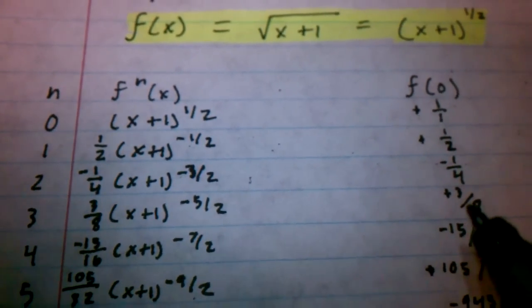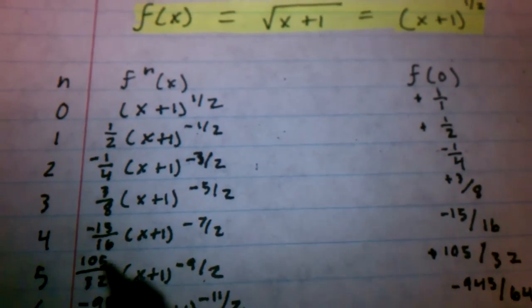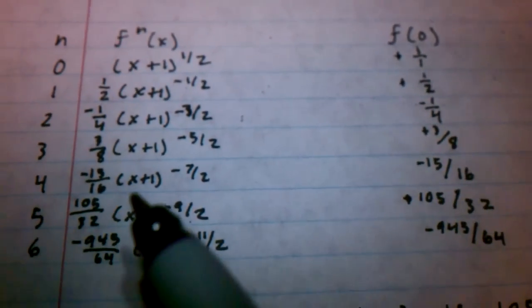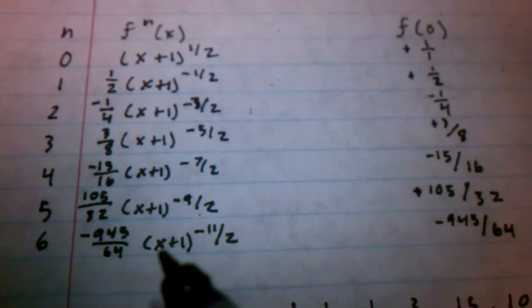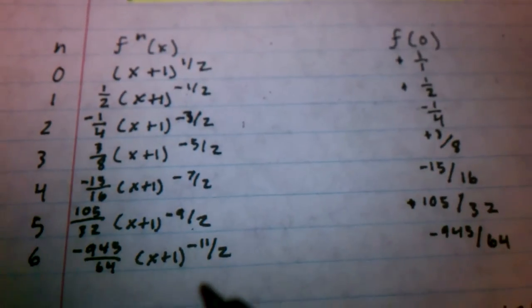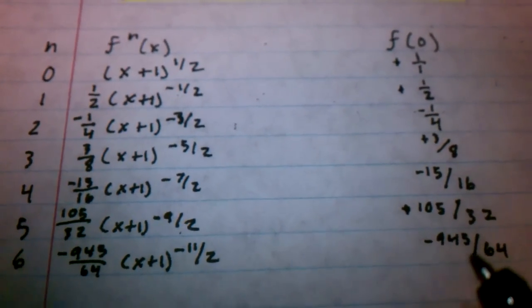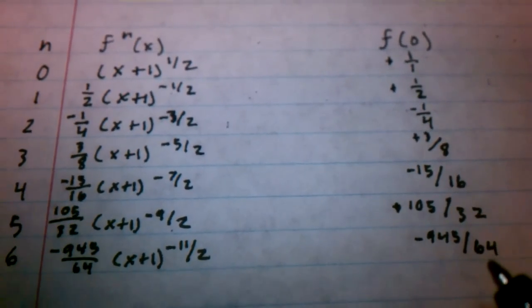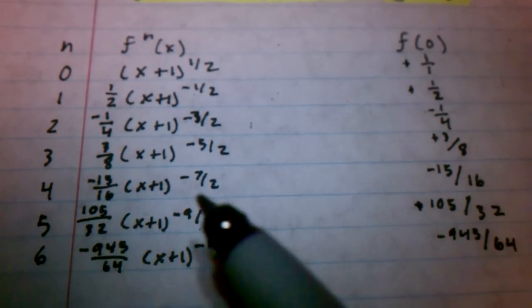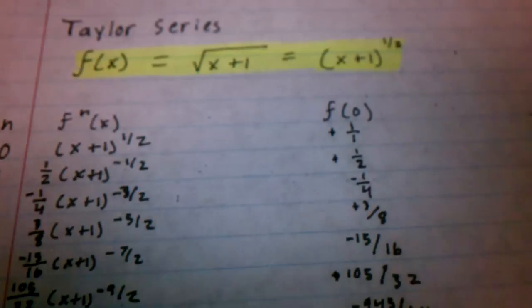Third derivative, we get 3 eighths, 4th, 5th, 6th. See how the function goes, 6th function, negative 945 over 64 times x plus 1 to the negative 11 halves gives us, of course, negative 945 over 64. So, here are the derivatives of the function, and we're going to start looking here.